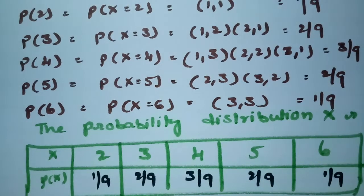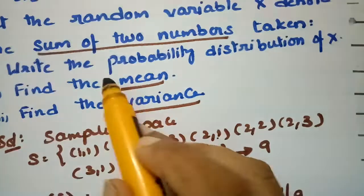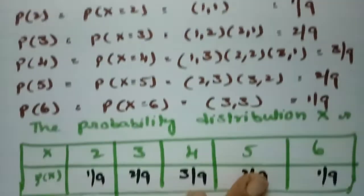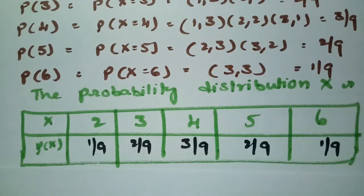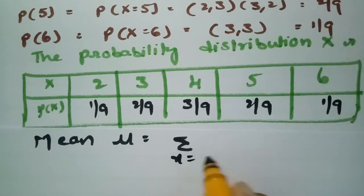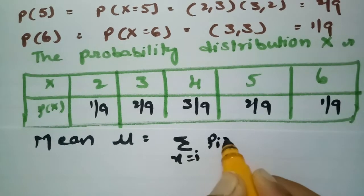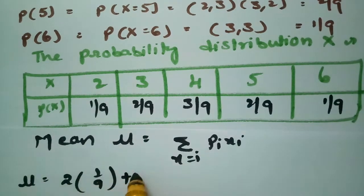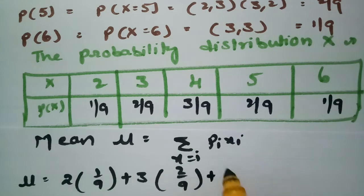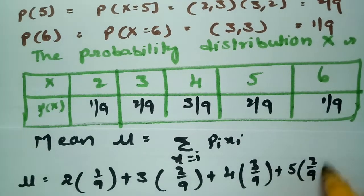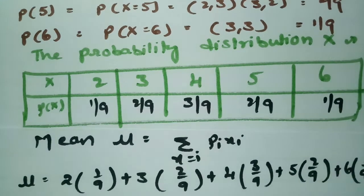Next we find the mean and the variance using this probability distribution. The formula for mean is μ = Σ xi · pi. So mean μ = 2·(1/9) + 3·(2/9) + 4·(3/9) + 5·(2/9) + 6·(1/9).